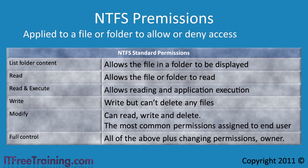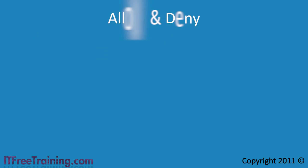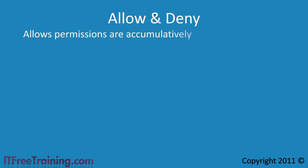Once you decide which permissions you want to give, you have a choice of allow or deny. Allow permissions are accumulative — if you belong to multiple groups, you get all the access that those groups allow. The deny permission however overrides all other permissions.